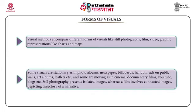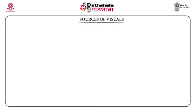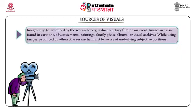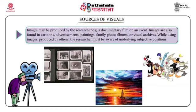Still photography presents isolated images whereas a film involves connected images depicting a trajectory of a narrative. The sources of visual images may be produced by the researcher — for example, a documentary film on an event — or found in cartoons, advertisements, paintings, family photo albums, or visual archives. While using images produced by others, the researcher must be aware of underlying subjectivity.